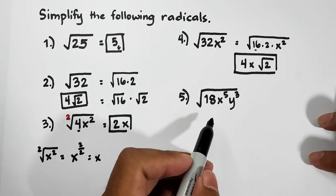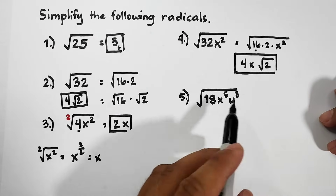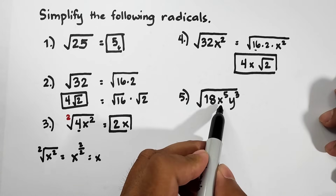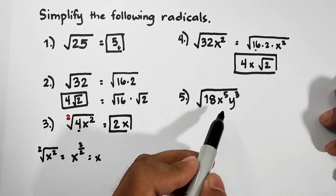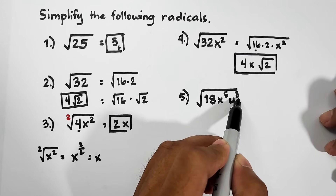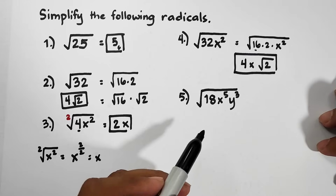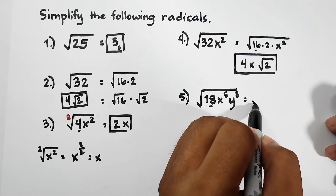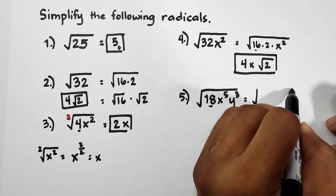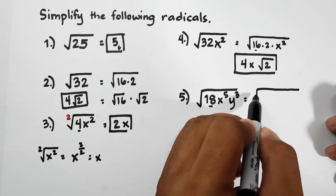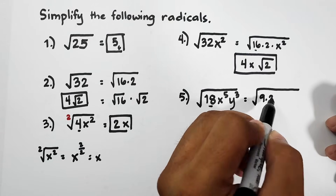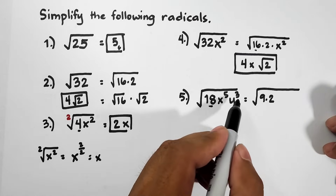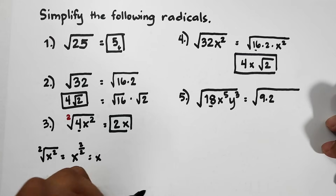Let's move on with item number 5. This one is quite different — we have the square root of 18x⁵y³. So 18 is not a perfect square, x to the 5th power is not a perfect square, and y cubed is also not a perfect square. What we do is first factor out 18. We factor it as 9 times 2, because 9 is a perfect square and 2 is not. For x to the 5th power, we can factor it out as x squared times x squared times x.